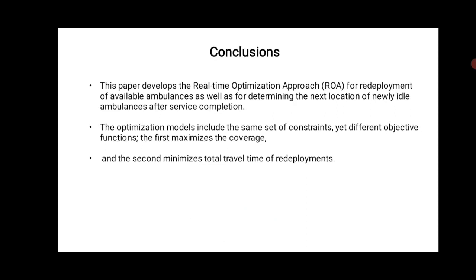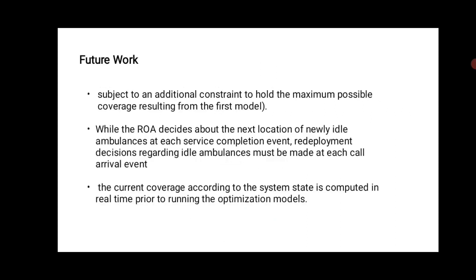The optimization model includes the same set of constraints yet different objective functions. The first maximizes the coverage, and the second minimizes the total travel time of redeployment. Future work involves an additional constraint to hold maximum possible coverage resulting from the first model, while the ROA decides about the next location of newly idle ambulances at each service completion event and redeployment decisions at each call arrival event.